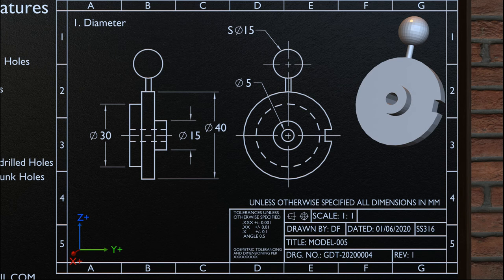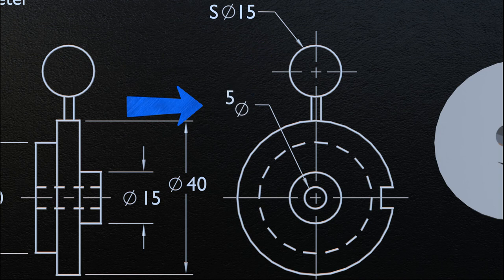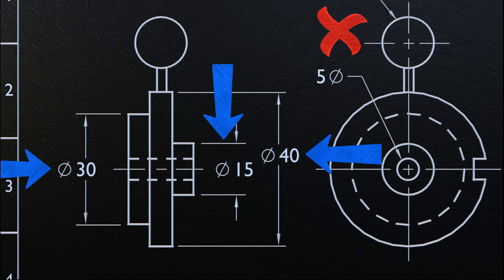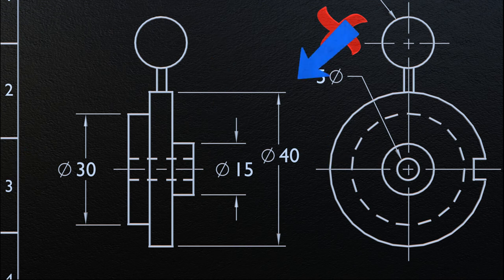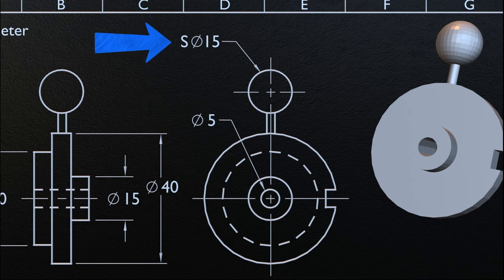Let's start with our first dimensioning feature, which is diameter. The diameter symbol precedes all diametral values; if we reverse them, then it is not good practice. Where the diameters of a number of concentric cylindrical features are specified, such diameters should be dimensioned in a longitudinal view if practical. Where the diameter of a spherical feature is specified, the diametral value is preceded by the spherical diameter symbol.